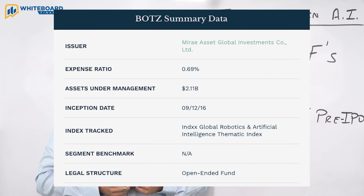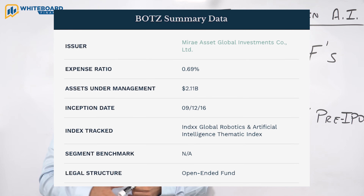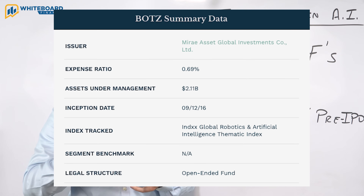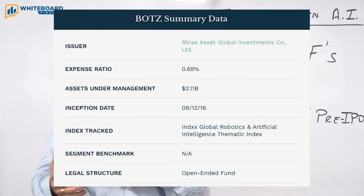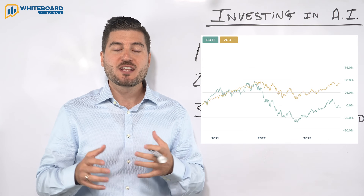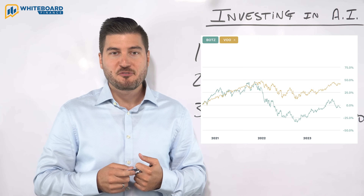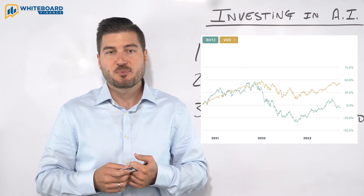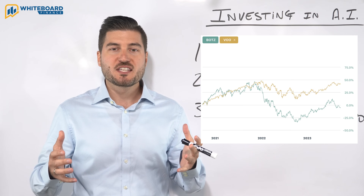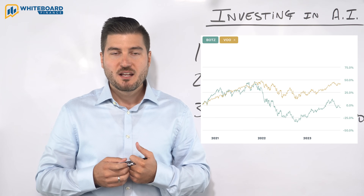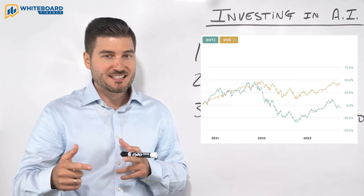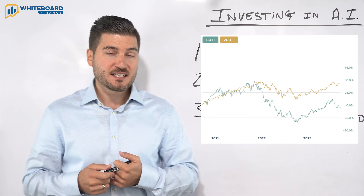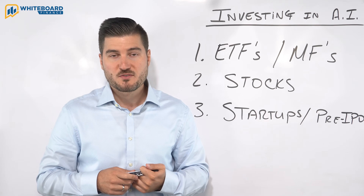And then finally, we have Global X's Robotics and Artificial Intelligence ETF, ticker symbol BOTZ. BOTZ provides market-cap-selected and weighted exposure to companies involved in the development and production of robots and artificial intelligence. This is currently a $183 billion market cap fund with 44 holdings and an expense ratio of 0.69%. There's more than just these three, but these came up in my research time and time again as the clear-cut ETFs and mutual funds for you to look at.